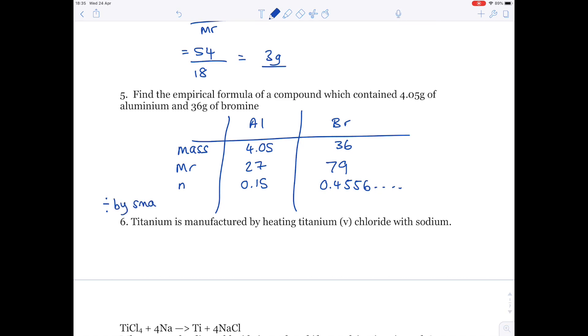Then, divide by the smallest number to find the ratio. So, identify the smallest number here. It's 0.15. To give a ratio of 1 to 3. And therefore, your final answer is AlBr3.